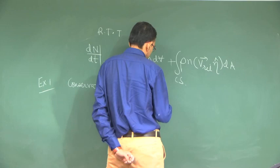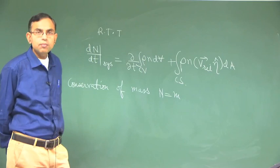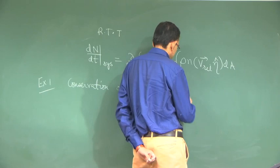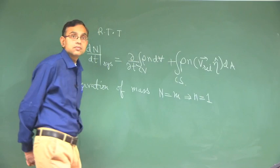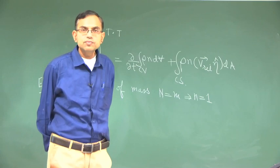Mass means capital N is equal to m, which is the total mass of the system. So, when capital N is equal to m, you have small n equal to 1, which is capital N per unit mass.